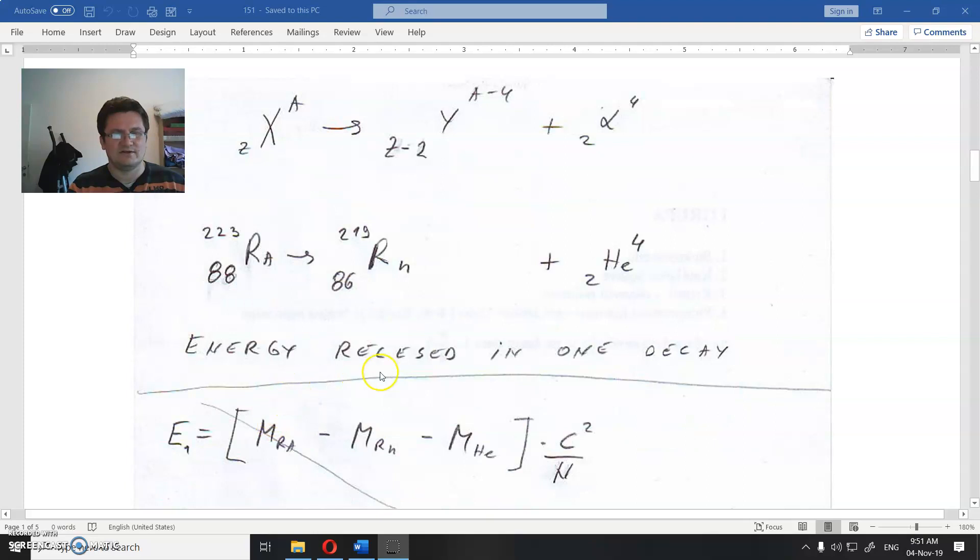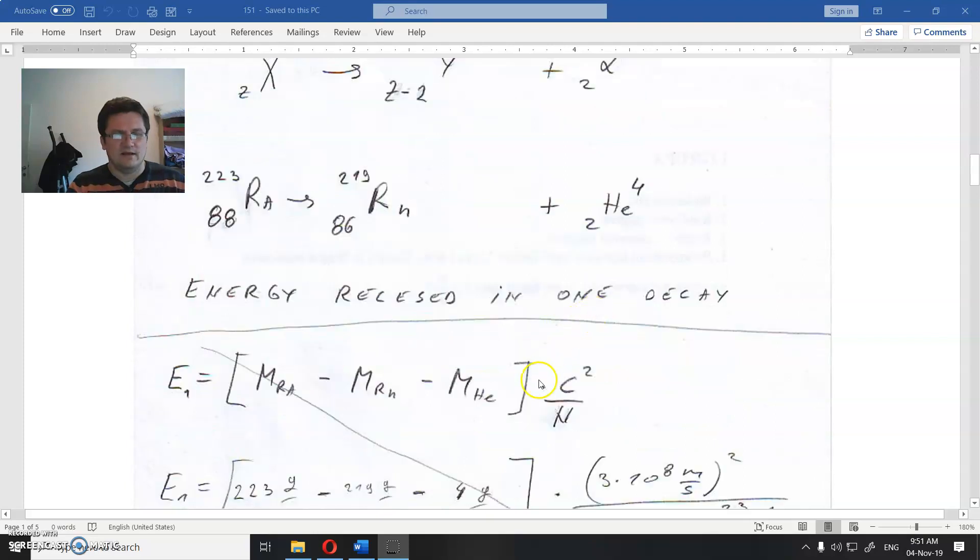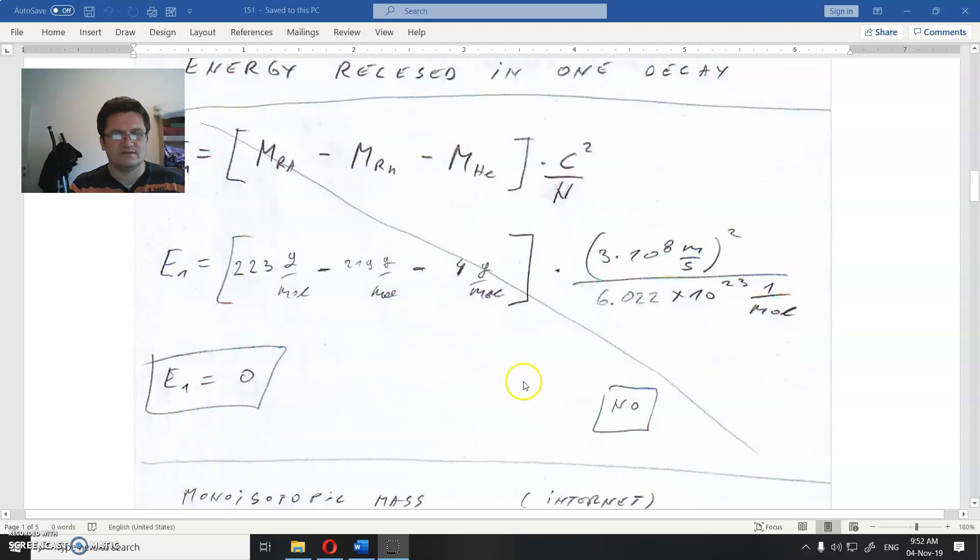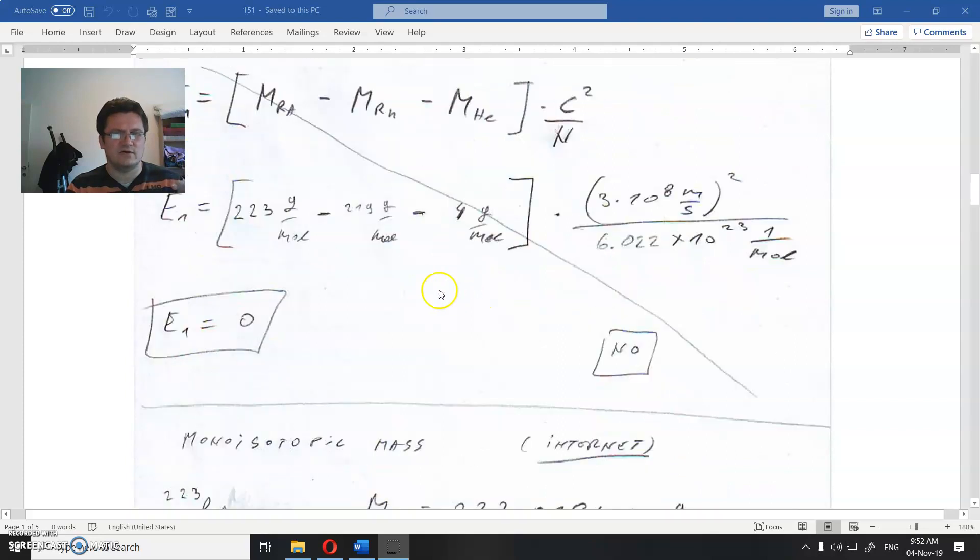What is the energy released in one decay? Energy is mass difference times the speed of light squared. What's wrong with this? If I just take the circled masses, I get energy to be zero, but that's not right.